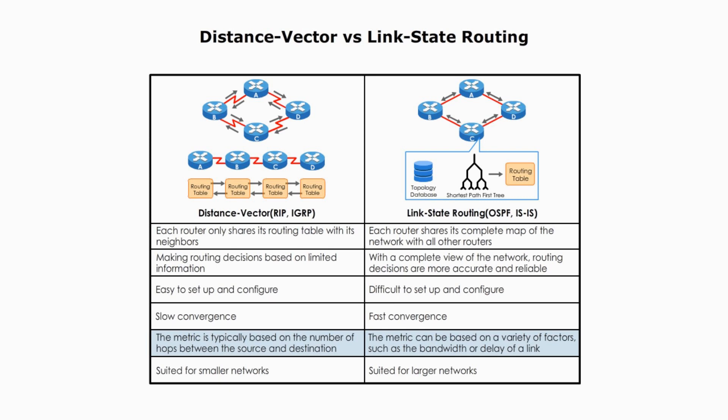Both distance vector and link state routing protocols use metrics to determine the best route to a given destination. In distance vector routing, the metric is typically the number of hops, intermediate devices between the source and destination. In link state routing, the metric can be based on a variety of factors such as bandwidth, reliability, and latency. For these reasons, link state routing protocols are suitable for larger networks, while distance vector algorithms are suited for smaller networks.